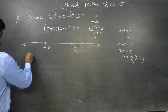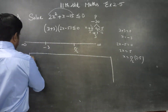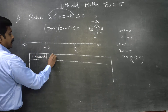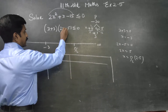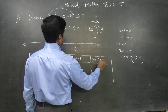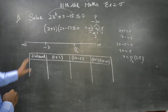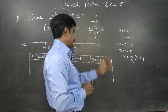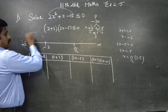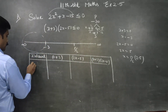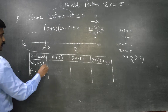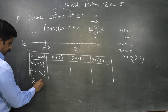What do we do with the two factors? The first factor is x + 3, the second factor is 2x − 5, and the third is their product (x + 3)(2x − 5). I have three intervals: the first interval is (−∞, −3), the second interval is (−3, 5/2), and the third interval is (5/2, ∞).